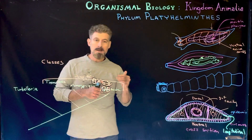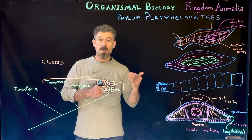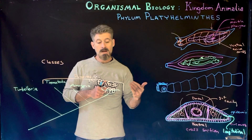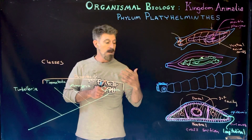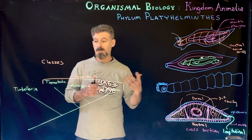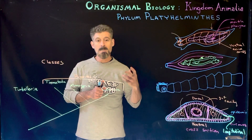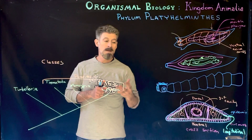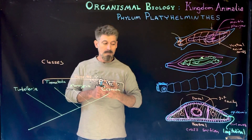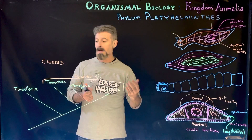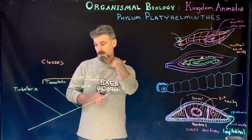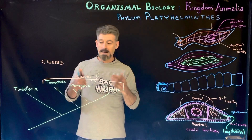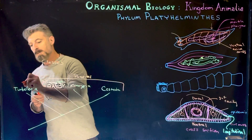As parasites, they require a host in order to complete their life cycle. In addition, they often require the host to live inside — some of them are completely dependent upon a host and could never live on their own outside of it. The Turbellaria tend to be more free-living.